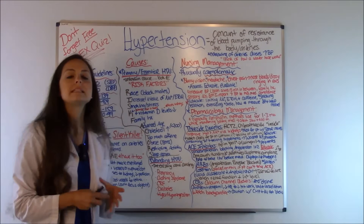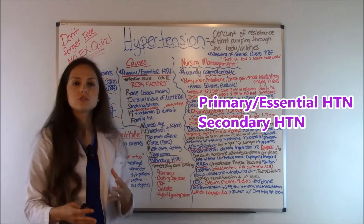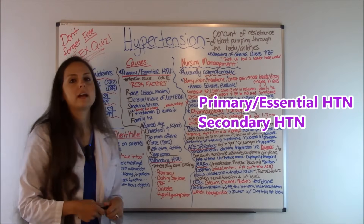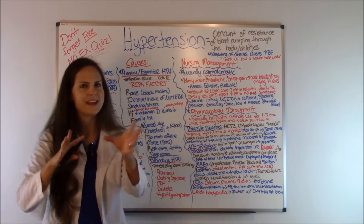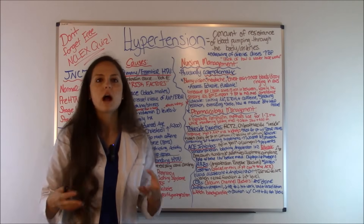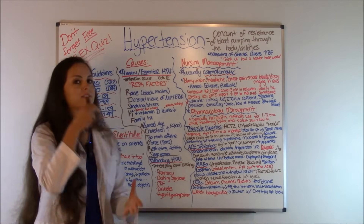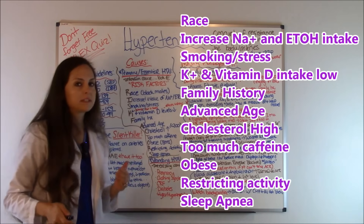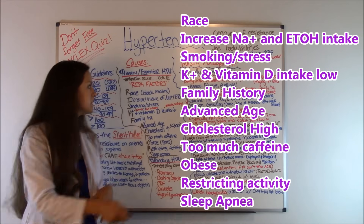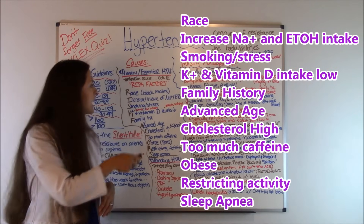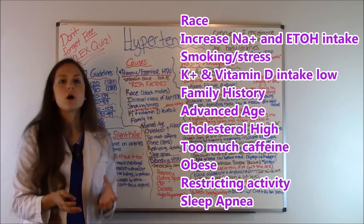There are two types of hypertension: primary/essential hypertension and secondary hypertension. On exams they like to give you a scenario and ask which patient is most at risk. To remember the risk factors, use the word RISK FACTORS — every letter correlates with a risk factor. R is for race: males who are Black are more at risk for hypertension.